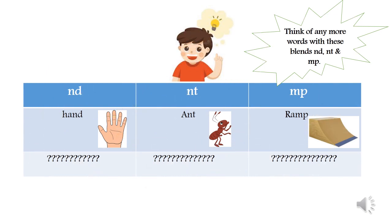You just learned the consonant blends ND, NT, and MP. This chart has some more words like hand and ramp. Can you think of any more words with this blend? Ask a parent to help you list them in a chart just like we did. Then use your words to practice reading and spelling your new blends. Be sure to practice what we've learned with our online lesson, and remember to always be clever!